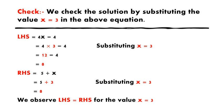Now take RHS. RHS is equal to 5 plus x, which is 5 plus 3, which is equal to 8. So we got LHS is equal to RHS. We observe LHS is equal to RHS for the value x is equal to 3.